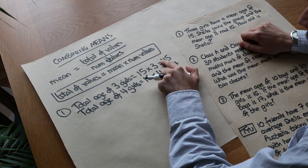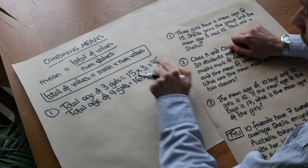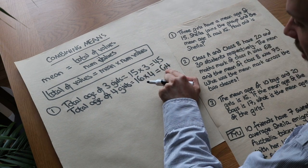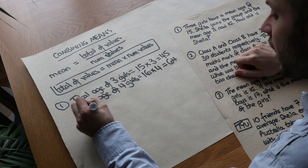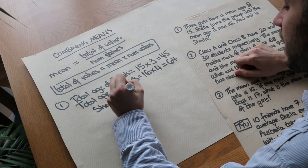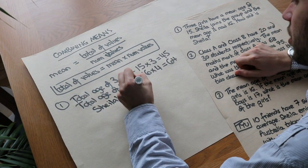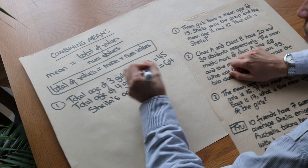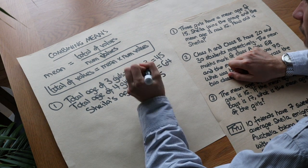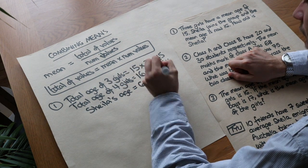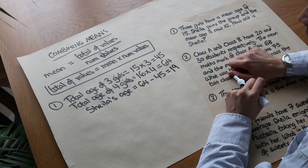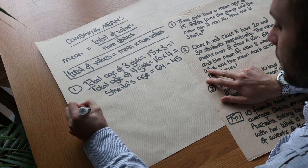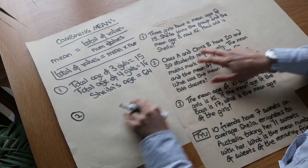If the total age before was 45 and then Sheila joins the group and the total age is now 64, then Sheila's age is just the difference between the two totals: 64 minus 45 equals 19. So Sheila was 19 years of age.